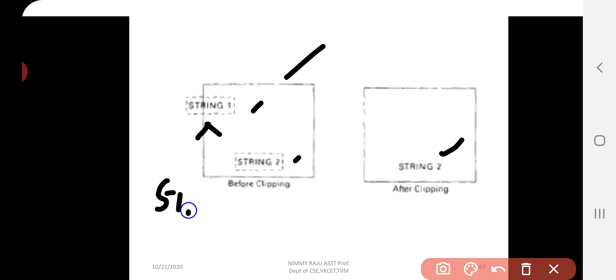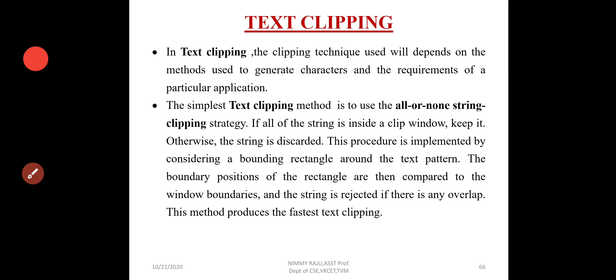If the bounding rectangle of the string is outside or partially overlapping, it should be discarded. This procedure is implemented by considering a bounding rectangle around the text. The boundary positions of the rectangle are then compared to the window boundaries, and the string is rejected if there is any overlap. This method produces the fastest text clipping.